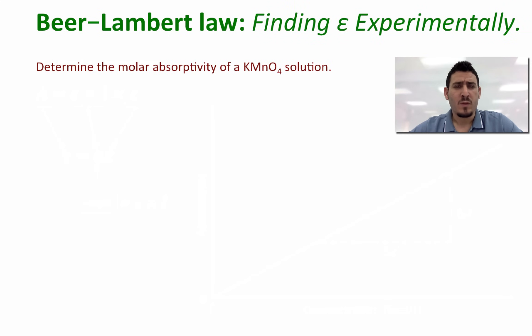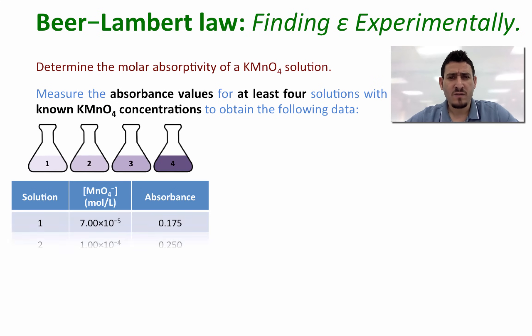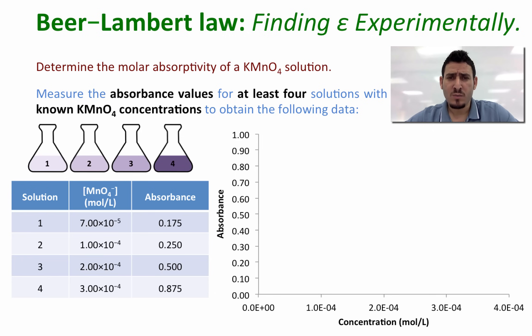Let's say we need to determine the molar absorptivity of a KMnO4 solution. We will start by measuring the absorbance values of at least four solutions with known KMnO4 concentrations to obtain the following data. Here we have the concentration and the absorbance. As you can see from the data in the table, when the concentration increases, the absorbance will increase as well. On a graph we can plot these points: the absorbance versus the concentration.